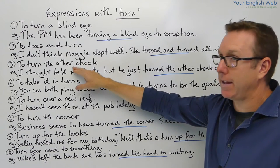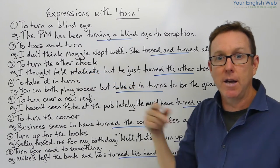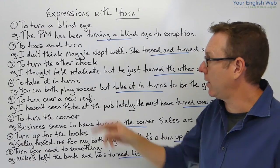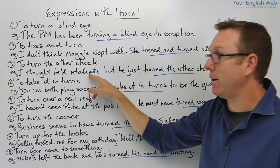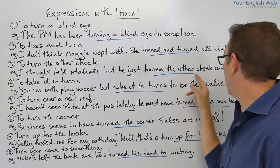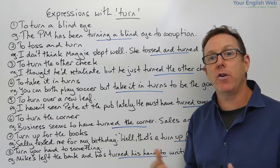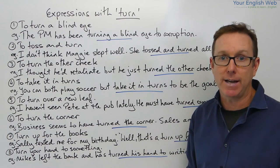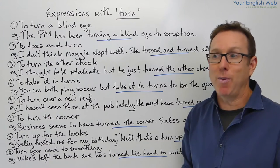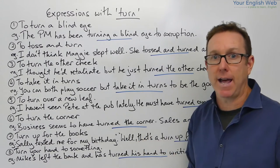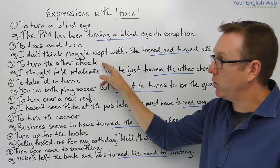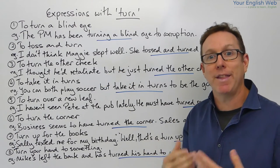The next one is to turn the other cheek. This is your cheek, and if you turn the other cheek — through context: I thought he'd retaliate, I thought he would fight back or argue back, but he just turned the other cheek and left. It means he didn't retaliate, he didn't fight back. Somebody was insulting him or being aggressive towards him, but he turned the other cheek and walked away.